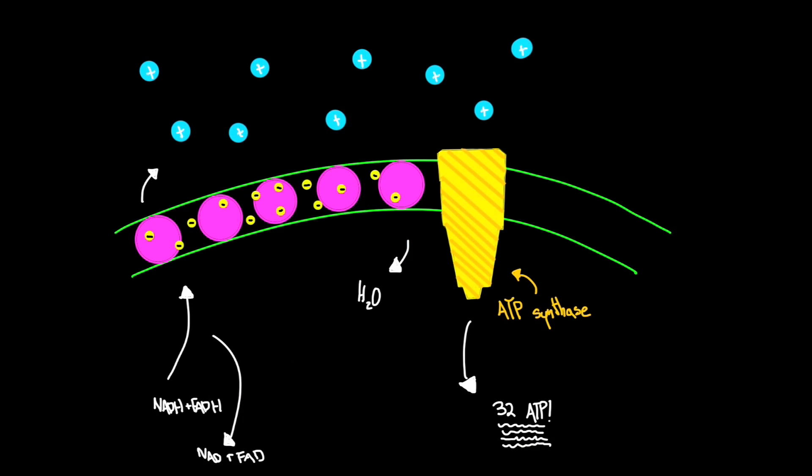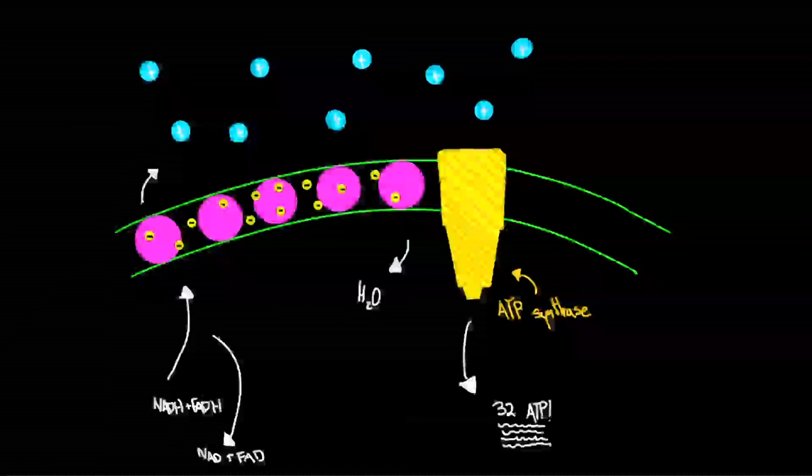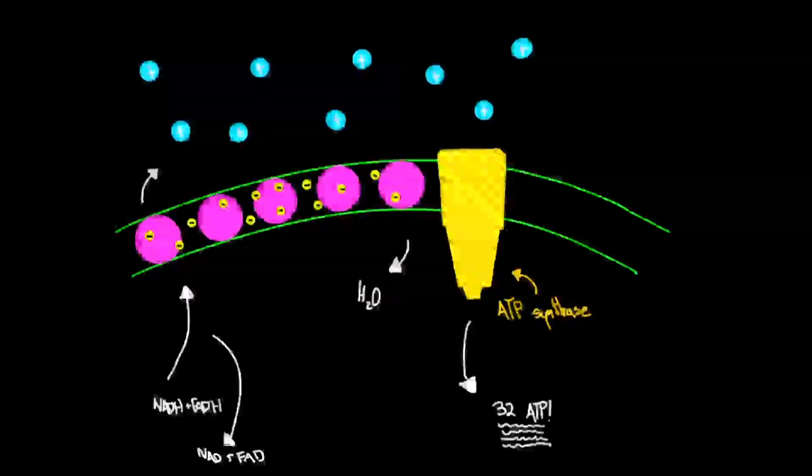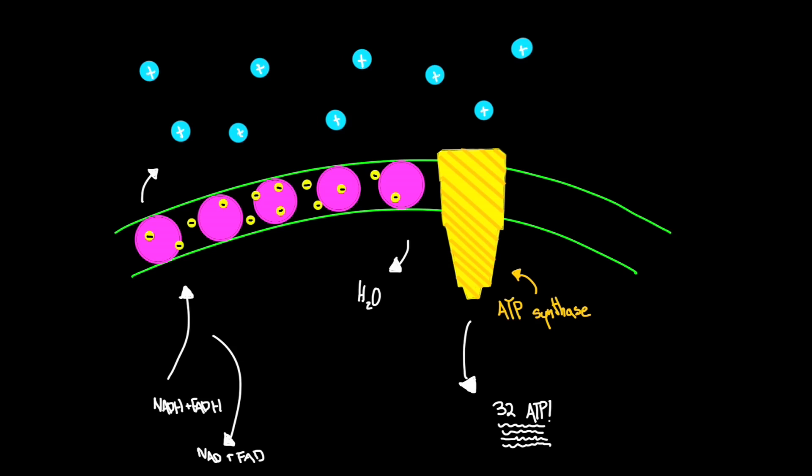In cellular respiration, the electron transport chain takes place inside the bacterial cell membrane. The NADH and FADH lose their electrons and protons and then they leave. The protons get allowed through the membrane and stay trapped on the other side of the membrane outside of the cell.